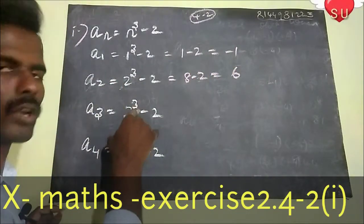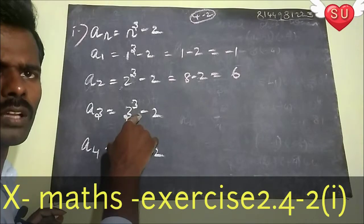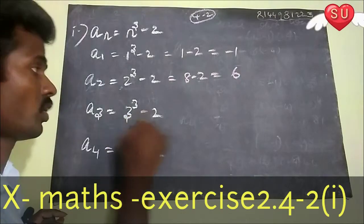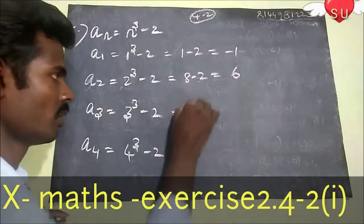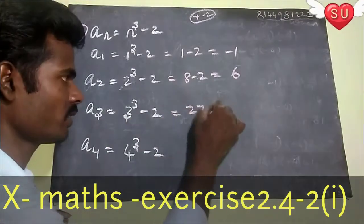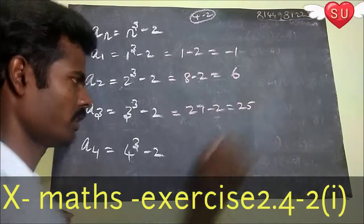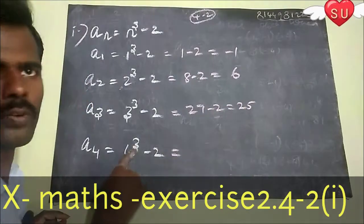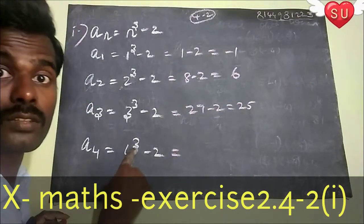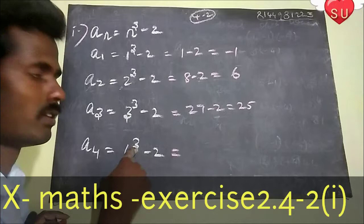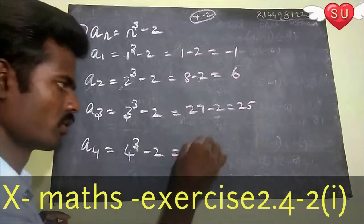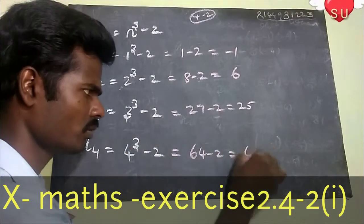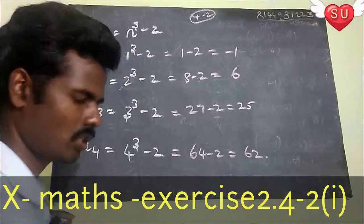For A^3: 3 cubed is 27, and 27 minus 2 equals 25. For A^4: 4 cubed — 4×4 is 16, 16×4 is 64 — so 64 minus 2 equals 62.